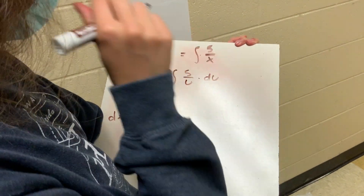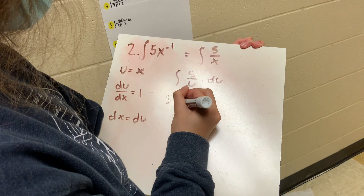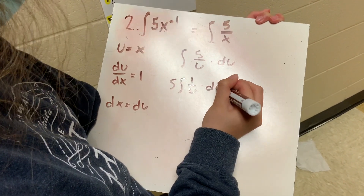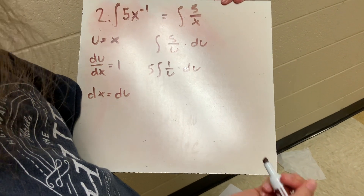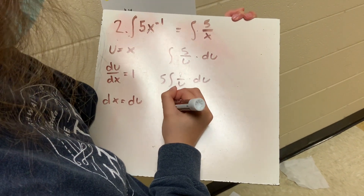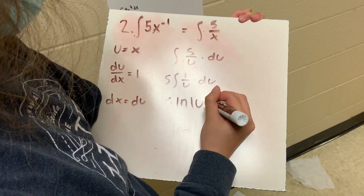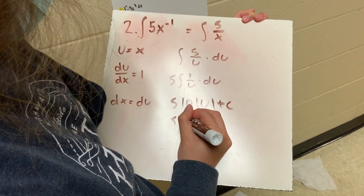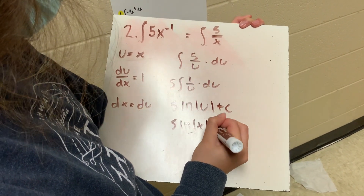And then after that, we will take out the 5 and put it in front of the integral, so it is 1 over u du. And then from that, we can use the equation — how it was in number one actually — and then it turns into 5 ln of u plus c, which turns into 5 ln of x plus c.